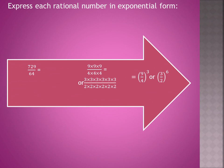There is a rational number and we have to express in the exponential form or in the power form. 729 upon 64 is the fraction form. It is called a rational number.